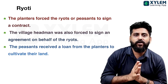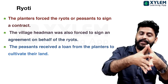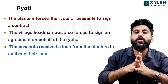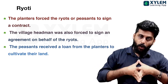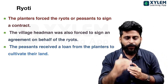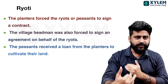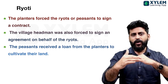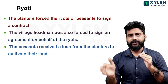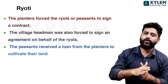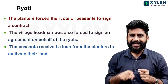The third point is that the peasants received a loan from the planter to cultivate their land, before planting. The planter provided seeds and other implements for cultivation.